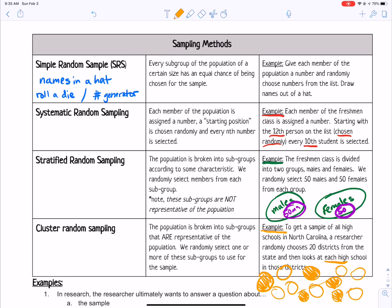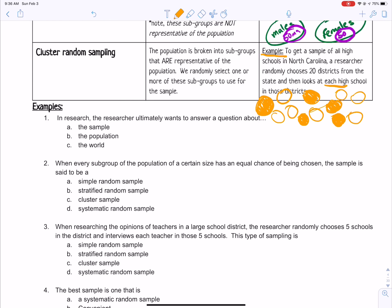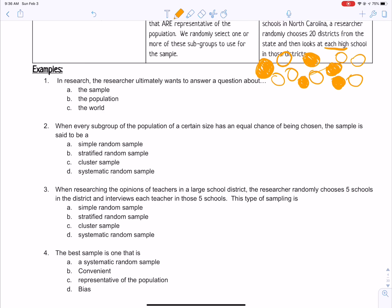So that's different than stratified because stratified took samples from each of the subgroups. Cluster sampling takes entire subgroups and samples everything in that subgroup. So they sound alike, but they're really different. All right, let's look at some examples.